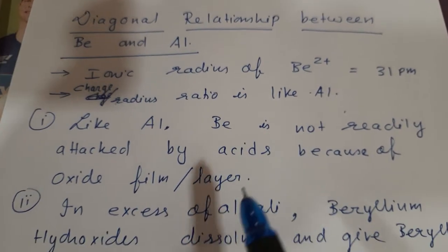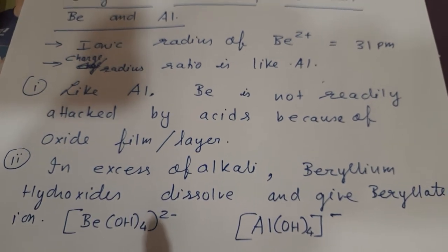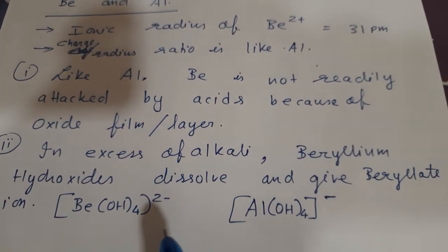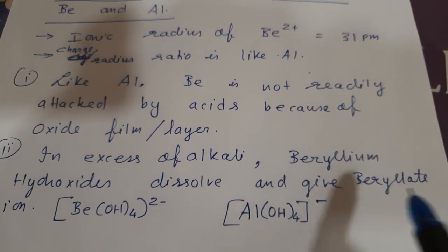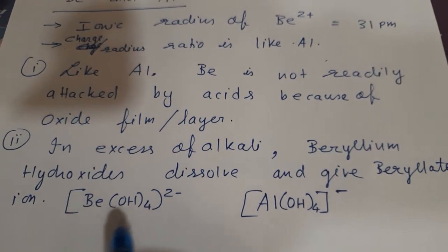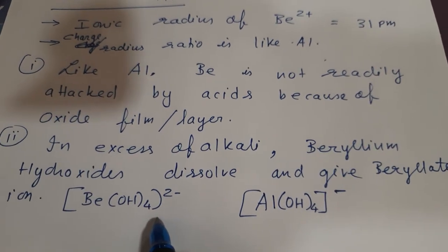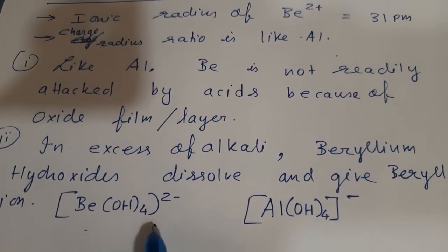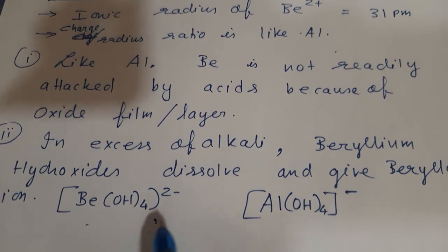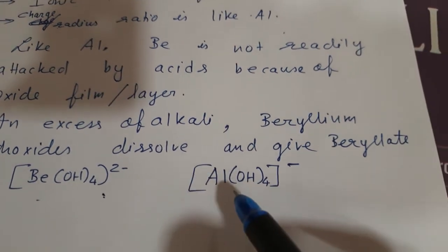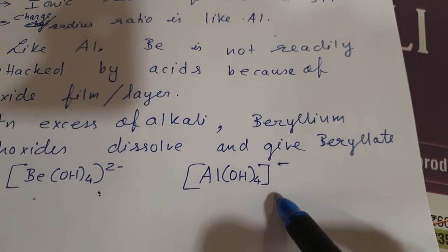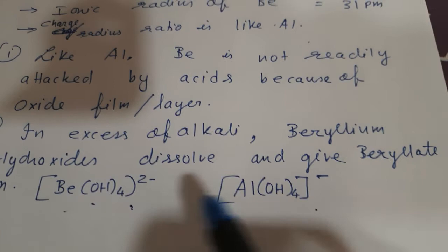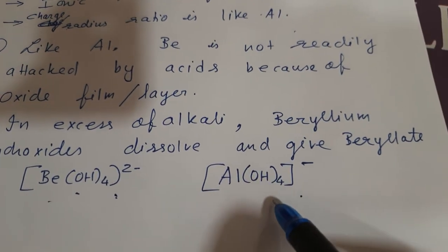In excess of alkali, beryllium hydroxide dissolves and gives the beryllate ion, whereas with aluminium in excess alkali, the aluminate ion is formed.